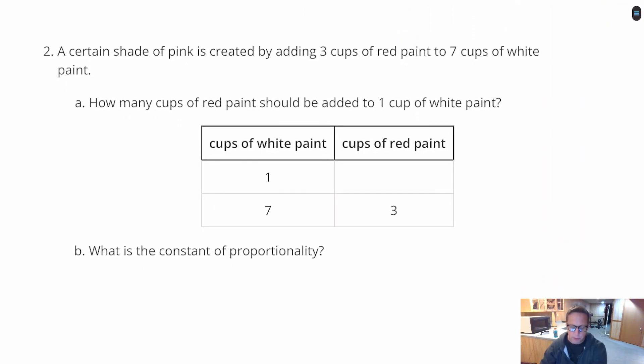For number 2, we've got a certain shade of pink is created by adding 3 cups of red paint to 7 cups of white paint. Question A is how many cups of red paint should be added to 1 cup of white paint?